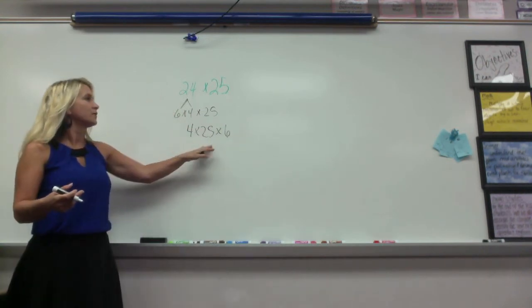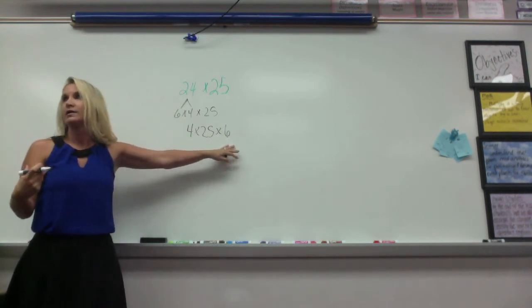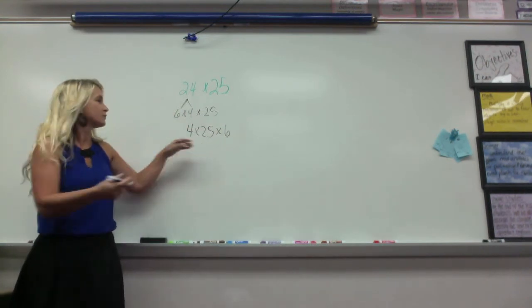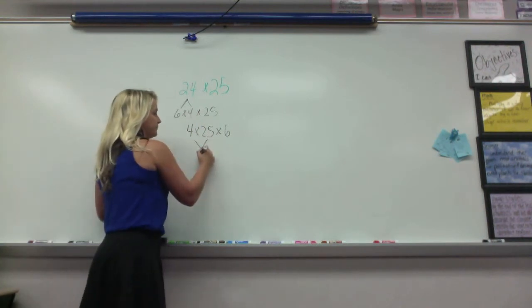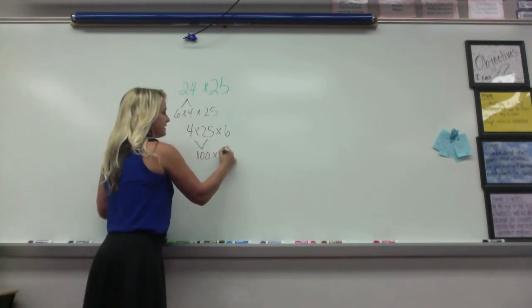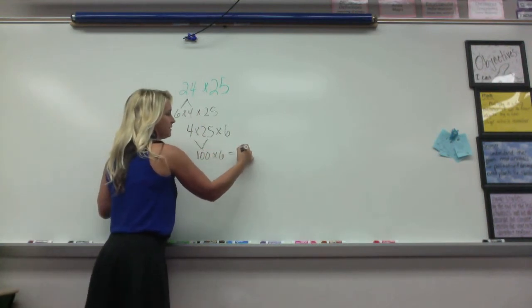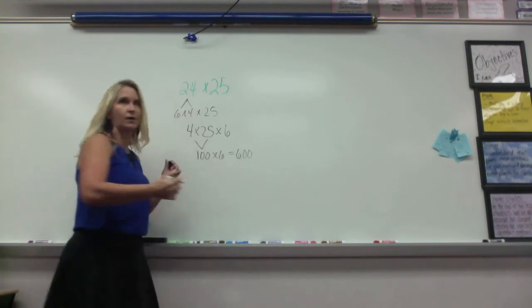4 times 25 times a number. So 4 times 25 is what, class? 100. 100 times 6 equals? 600.